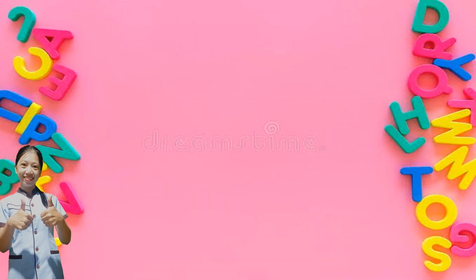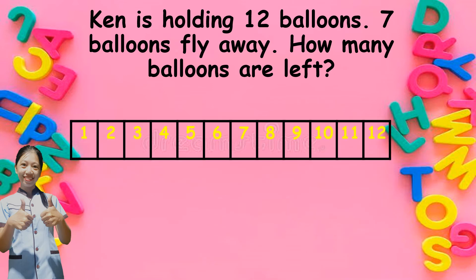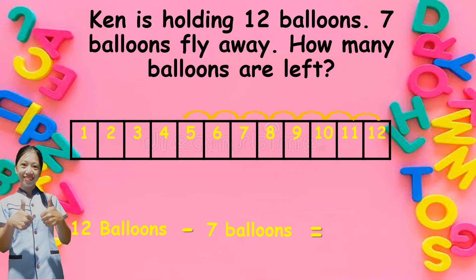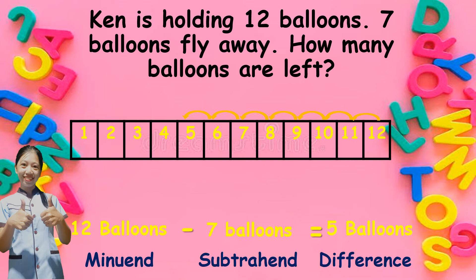Let us also solve the problem using the counting backward method. From twelve, let us count seven steps backward. The number we reach or stop at is the answer or the difference. So let us now count: one, two, three, four, five, six, seven. What number did we reach? Yes, it is five. So seven steps from twelve is five, or twelve minus seven is equal to five. Twelve is the minuend, seven is the subtrahend, and five is the difference.